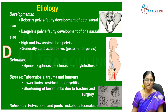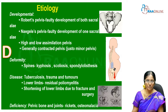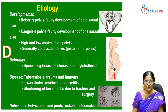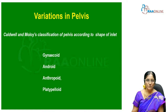Coming to the etiology: it can be developmental, such as Robert pelvis, naegele pelvis, high or low assimilation pelvis, or a generally contracted pelvis. Deformity can cause it — kyphosis, scoliosis, spondylolisthesis; diseases like tuberculosis, trauma, or tumors. Lower limb causes include residual poliomyelitis, shortening of the lower limb due to fracture and surgery. Deficiencies like rickets and osteomalacia can also cause a contracted pelvis.